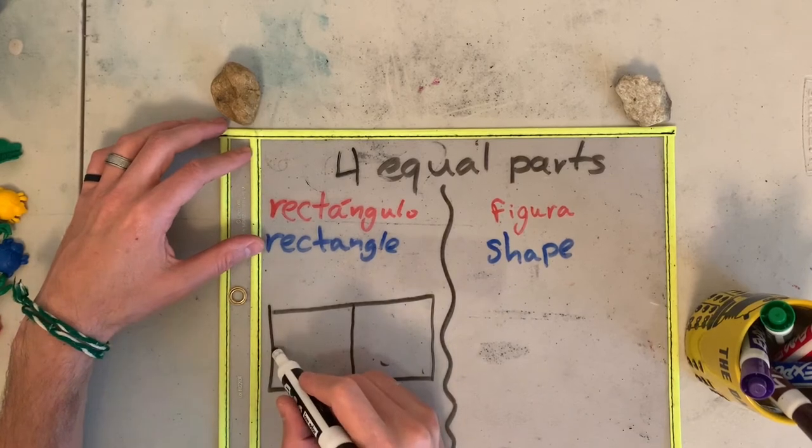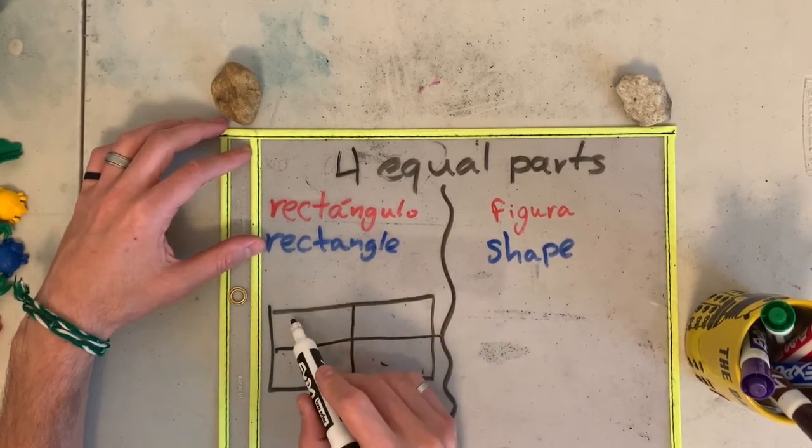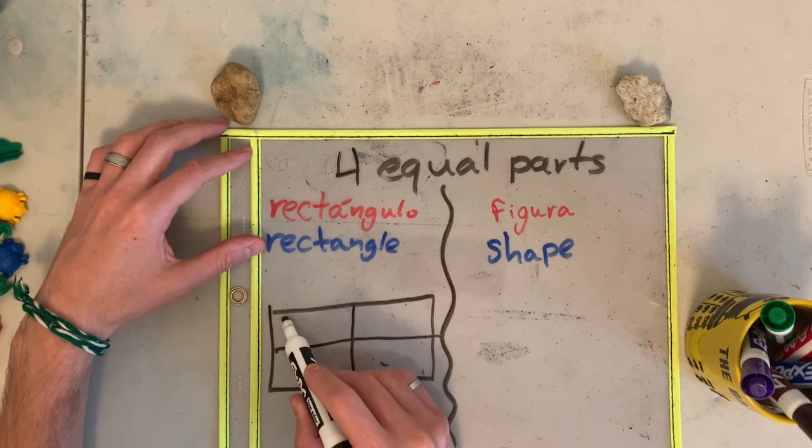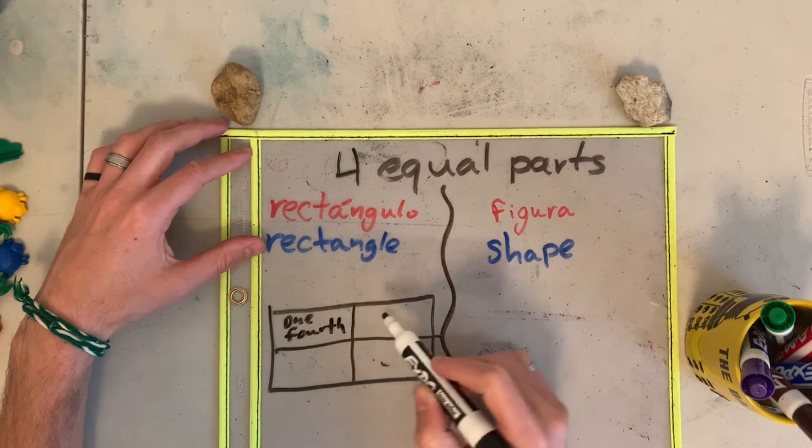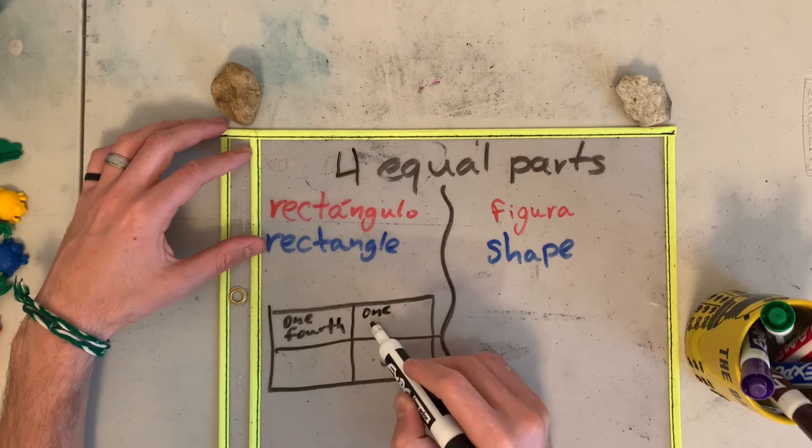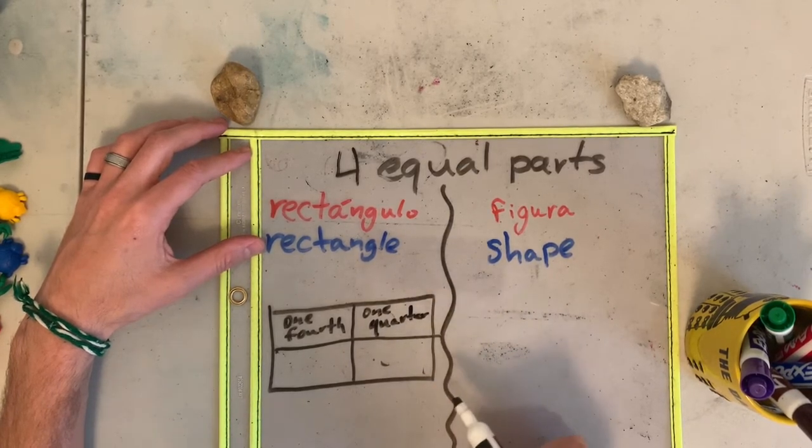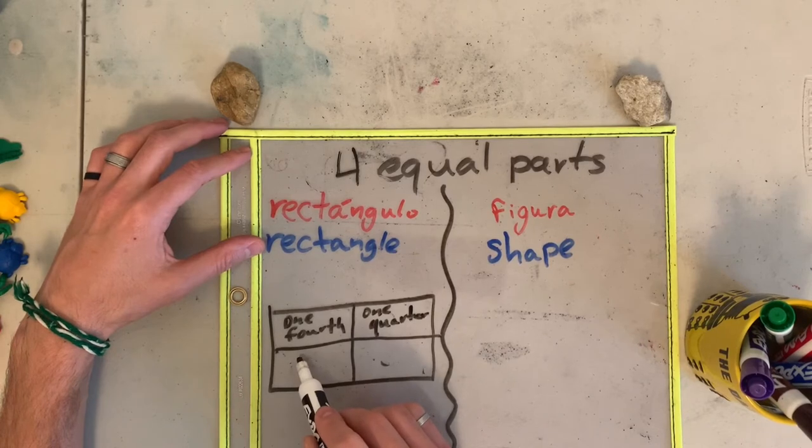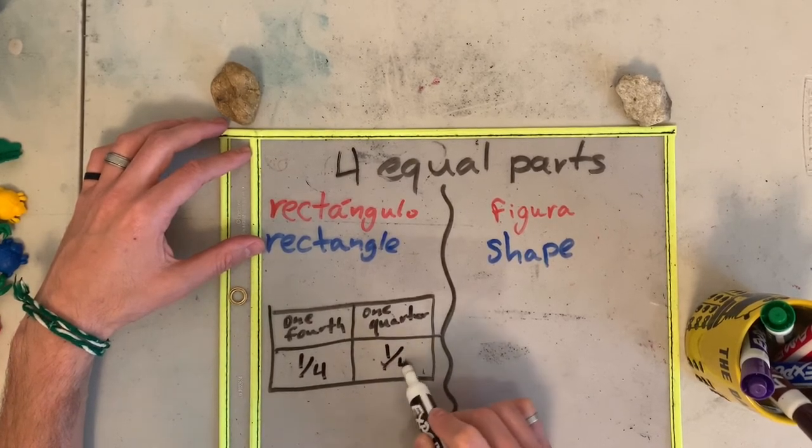So that means that today we need to add more parts. So if I want to do four equal parts, one line in the middle right here, then I have one fourth en palabras. Another way you can say one fourth is one quarter. And in standard form, it goes like this: one fourth, one quarter.